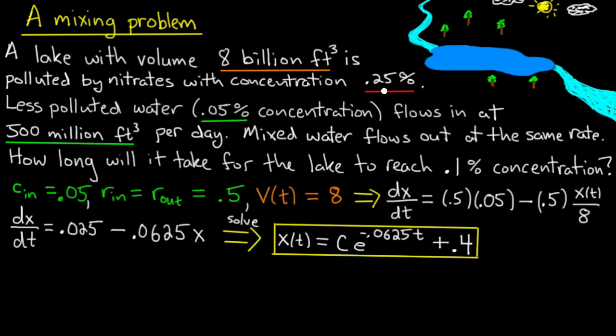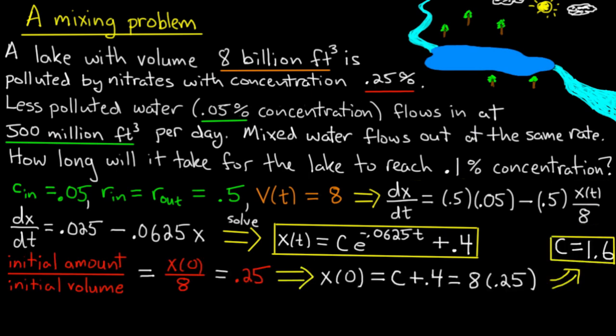And that initial value is the initial concentration of pollutants. So I can find C by noting that 0.25%, that's the initial amount divided by the initial volume, which is x over 8, and that's equal to 0.25. And that will imply that x is C plus 0.4, plugging in t equals 0 in my general solution, equals 8 times 0.25. And that gives me C equals 1.6. So now I have a particular solution which describes exactly this model.